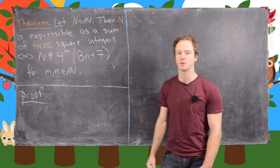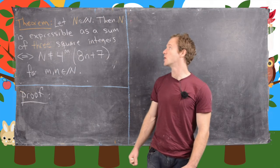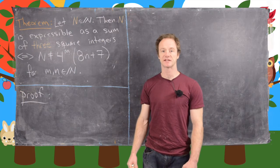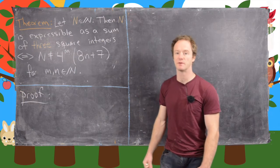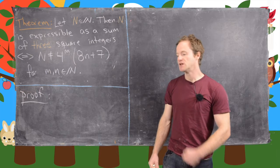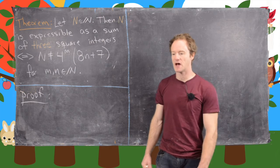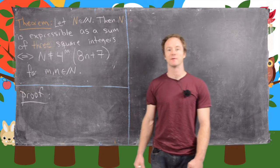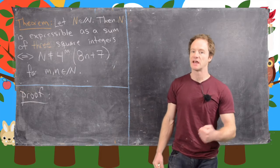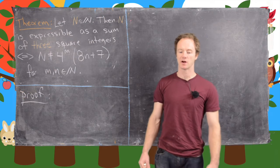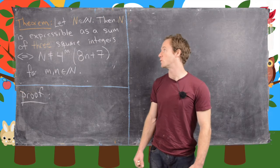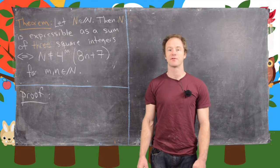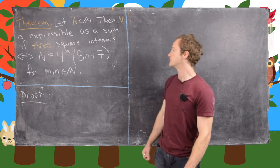This is part of a series of videos where we explore when a natural number n is expressible as a sum of squares. We've wrapped up the question of when n is expressible as the sum of two squares, and in this video we're going to move on to when n is expressible as a sum of three squares.